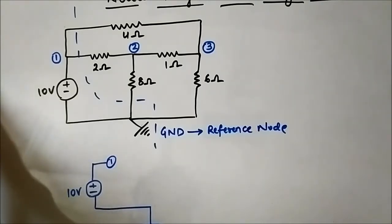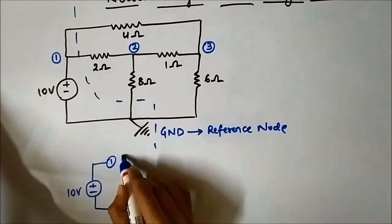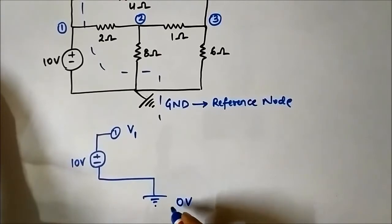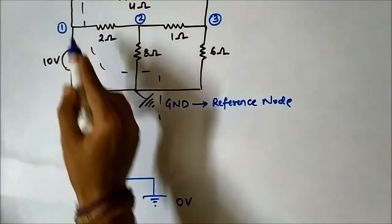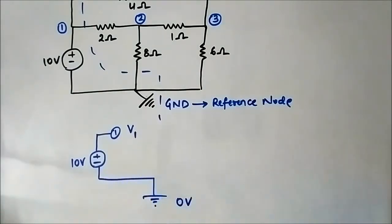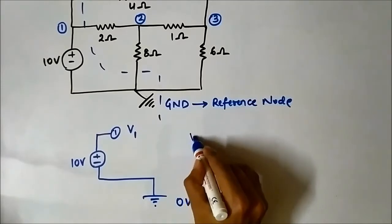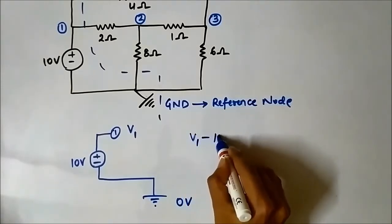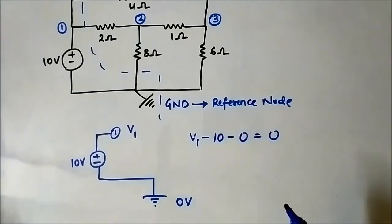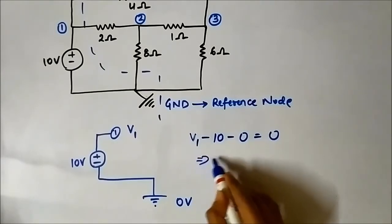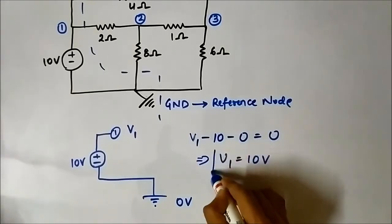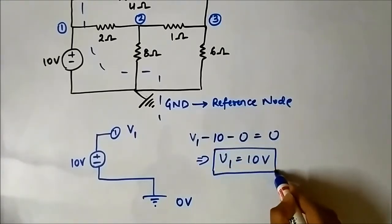Here the voltage is 0 volt and here it is V1. If we apply KVL here, it will be: V1 minus 10 minus 0 equals 0. That implies the voltage at node one is equal to 10 volts.